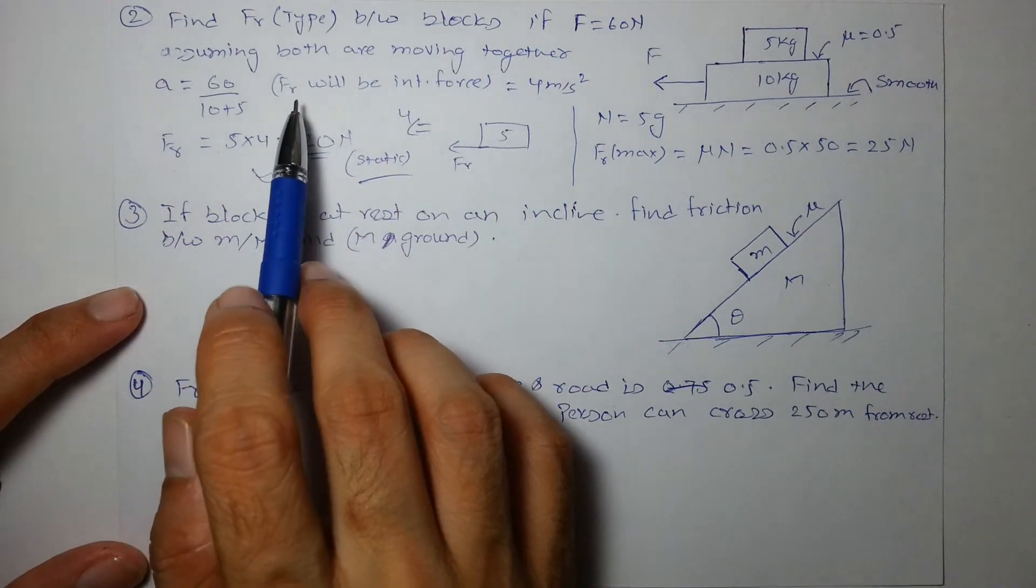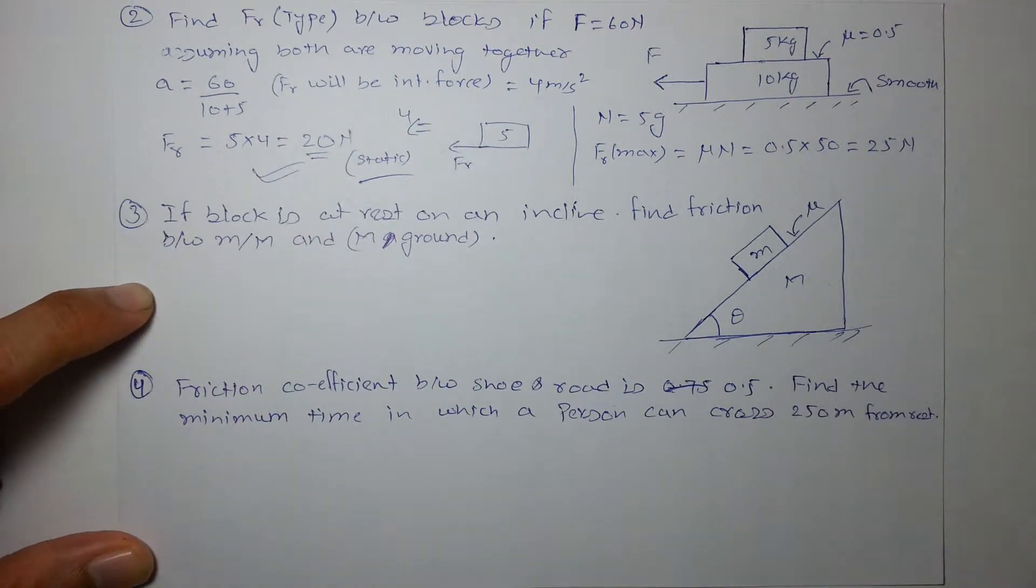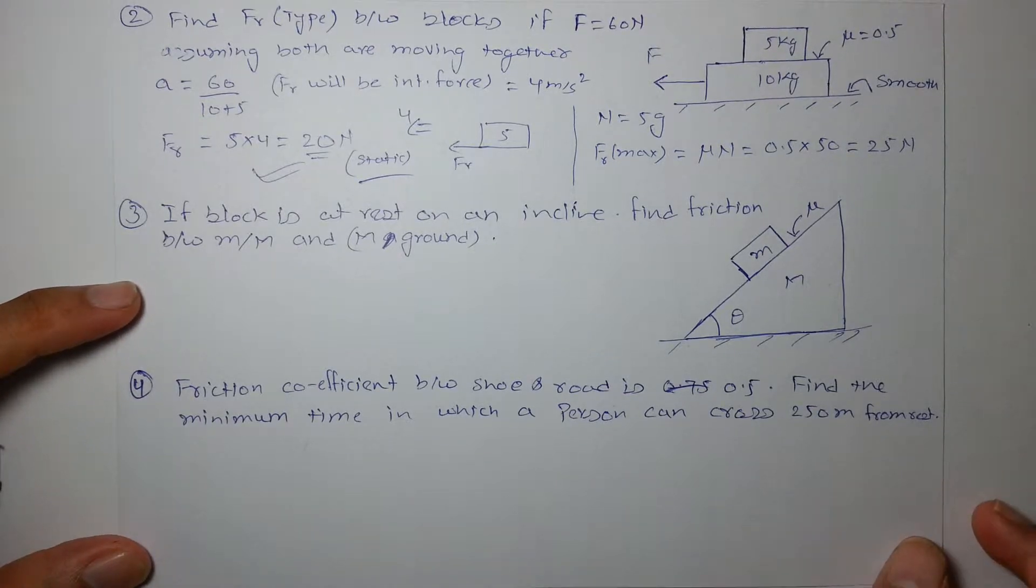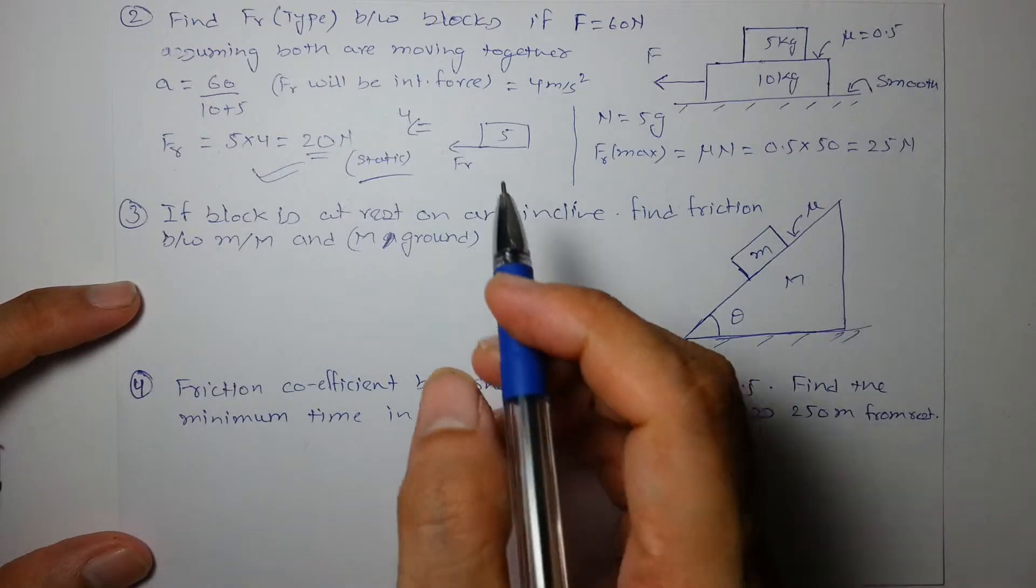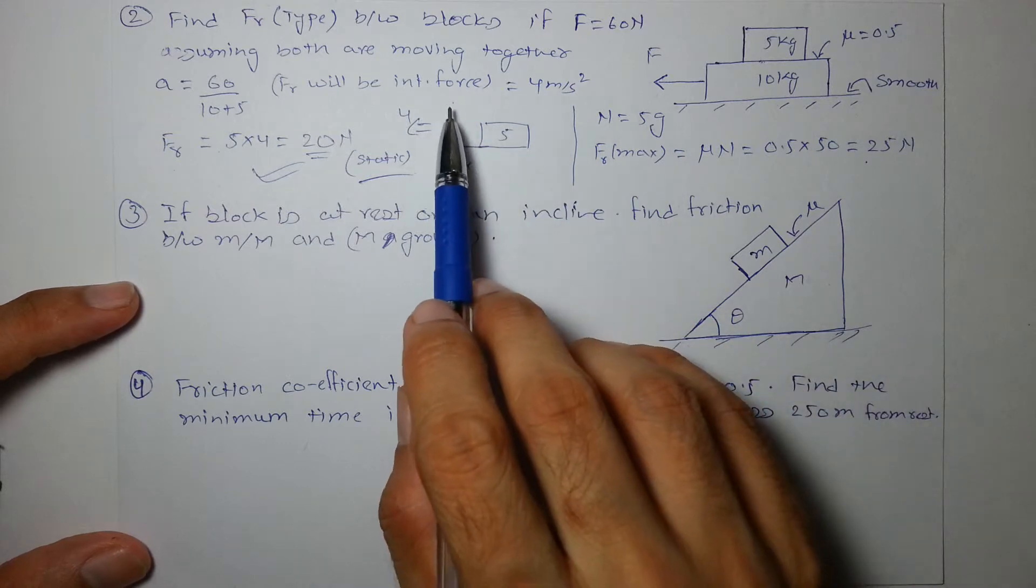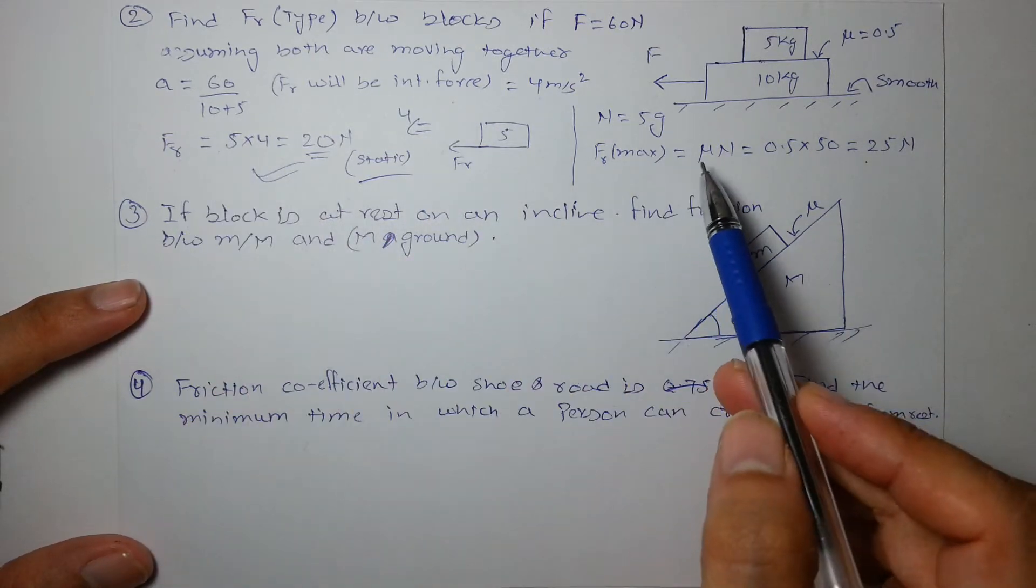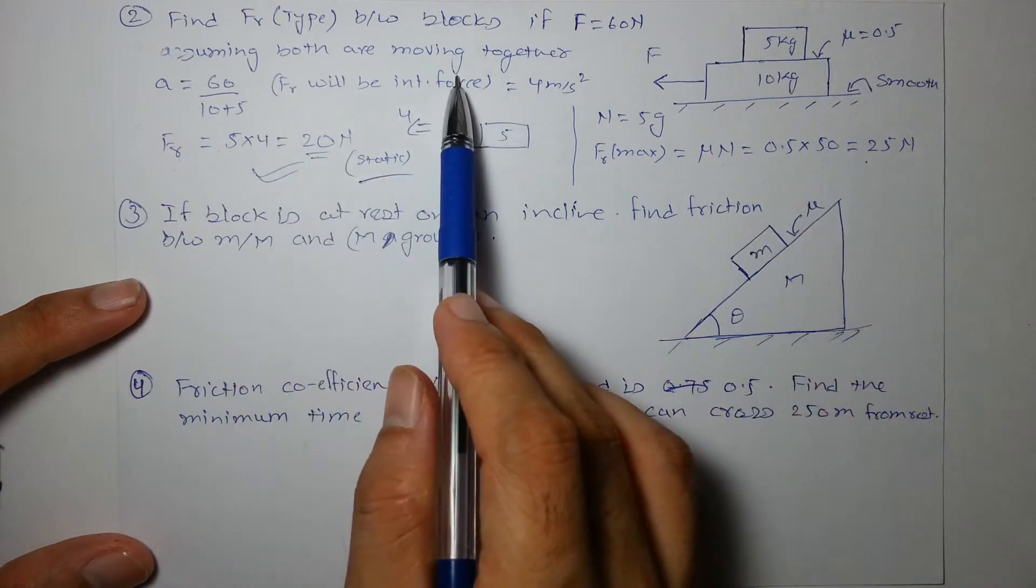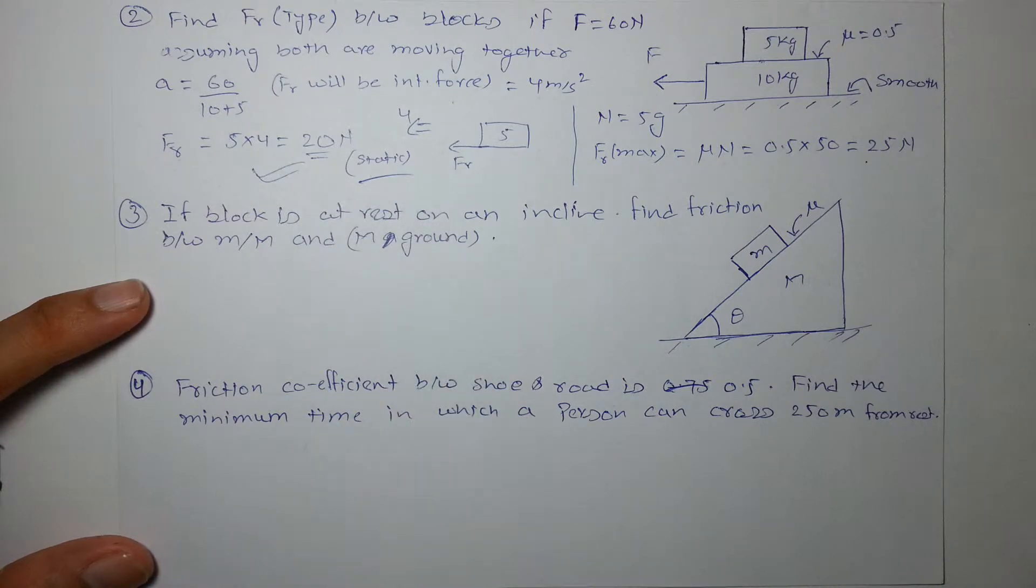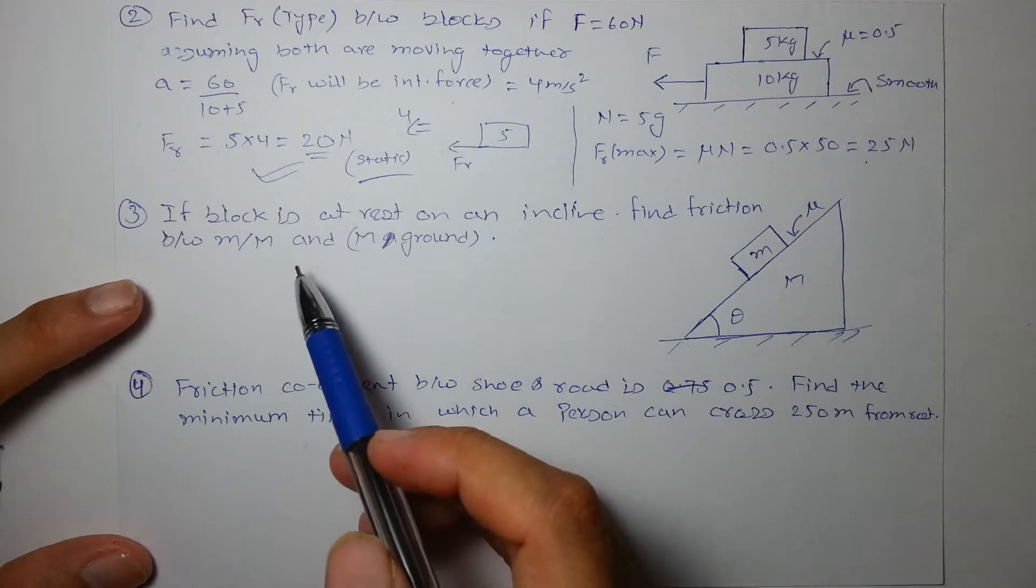Whenever you are not aware of whether the blocks are slipping or not, just assume that they are moving together and then solve your question. If friction comes out to be greater than the maximum possible friction, then your assumption is wrong and slipping is taking place. But if friction comes out to be less than the limiting friction, then your assumption is right and static friction will be acting and there is no slipping taking place between the objects. I hope you got it.